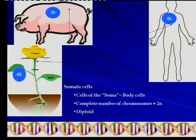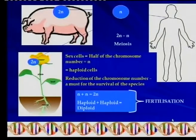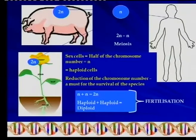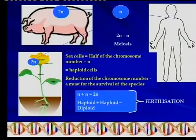If we go on to the next slide, you will see what meiosis does — it reduces the diploid number to the haploid number. What is important is that you should know that for sex cells, meiosis halves the number of chromosomes from diploid to haploid. Let's look at what we mean by that.